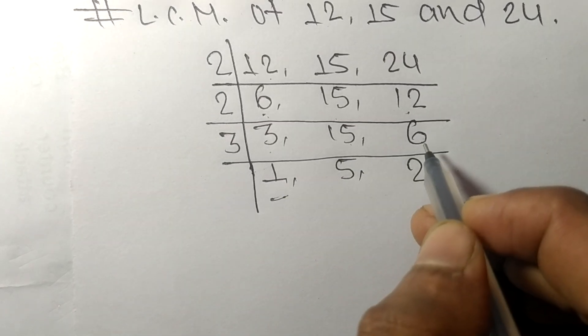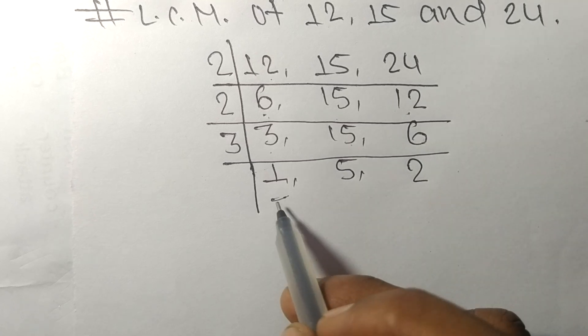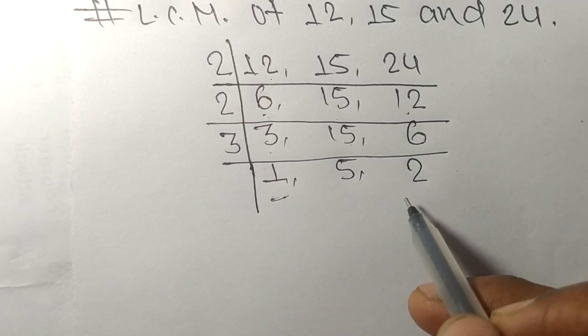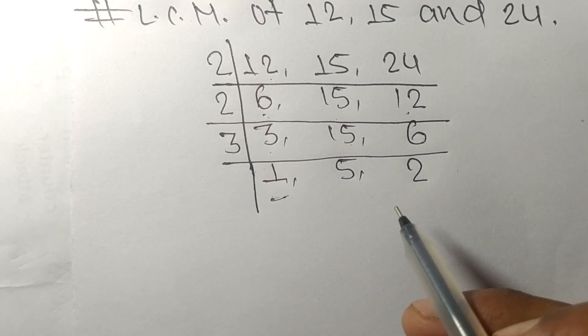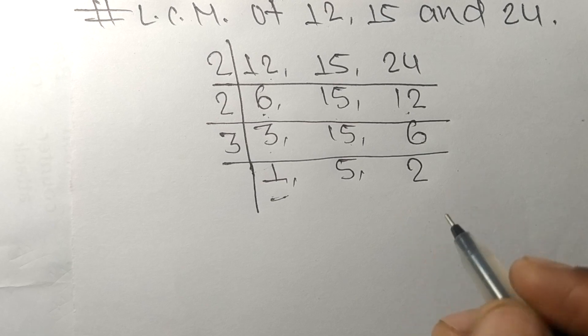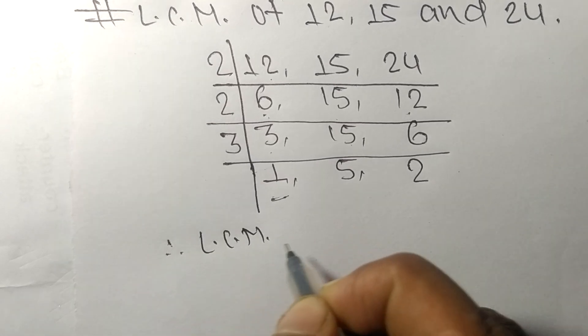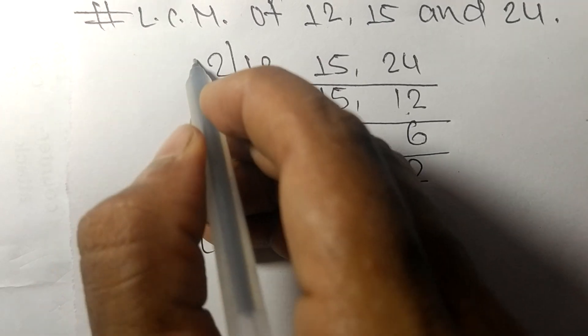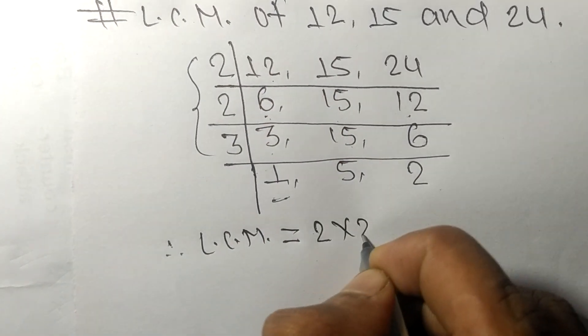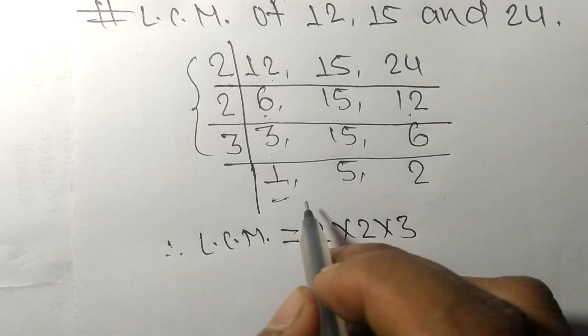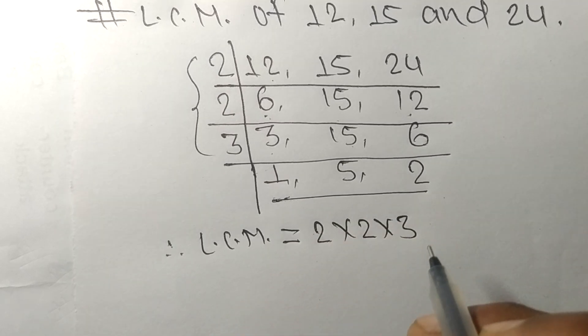So now we got 1, 5, and 2, which are not exactly divisible by the same number. Therefore, the LCM is equal to, from this side, 2, 2, and 3, and from this side we choose the numbers greater than 1, that is 5 and 2.